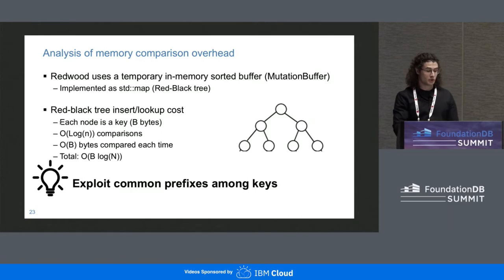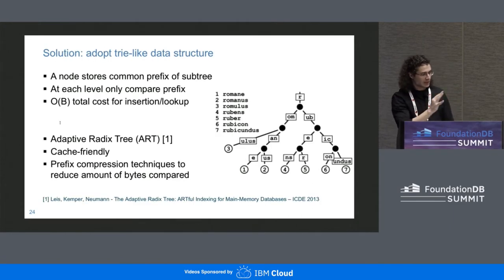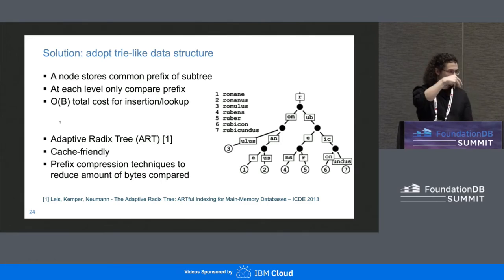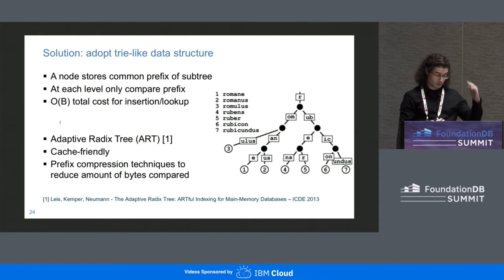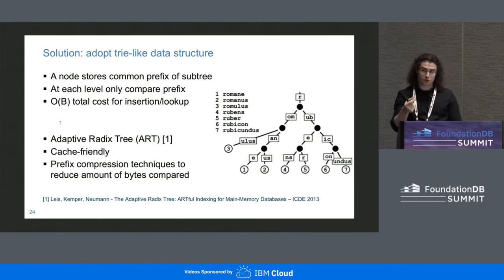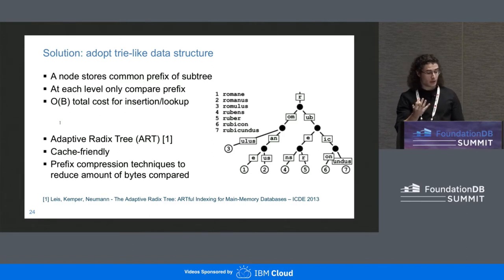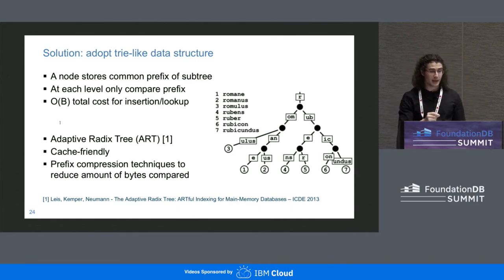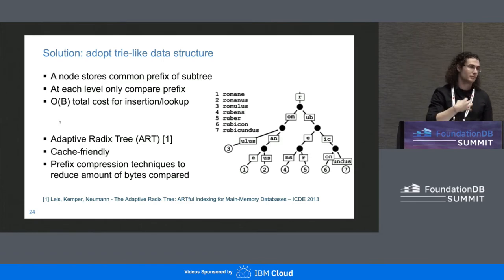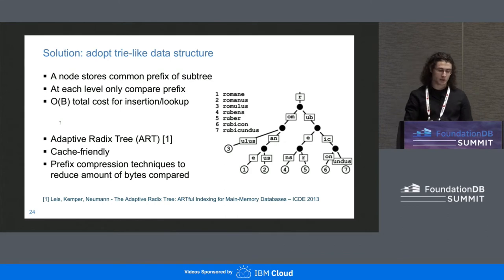Instead of a red-black tree, we propose using a trie — specifically the adaptive radix tree (ART), a state-of-the-art trie-like data structure. In a trie, each node stores only the portion of the key corresponding to the prefix of keys in its subtree, so at each level you compare only a portion of the key. The total cost for inserting or finding a key is just O(B) — a logarithmic improvement. ART is compact, cache-friendly, and implements prefix compression tricks that further reduce the bytes compared during lookups.